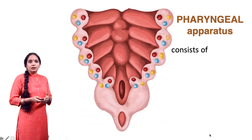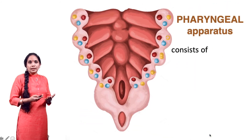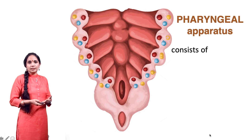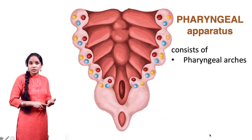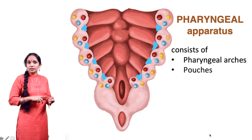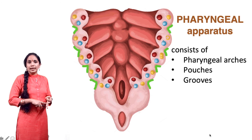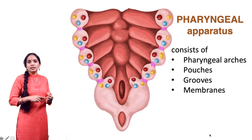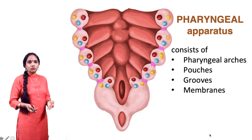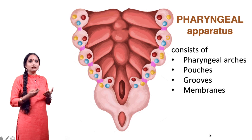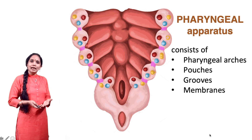Together we call all of them the pharyngeal apparatus. So the pharyngeal apparatus consists of pharyngeal arches, pharyngeal pouches, pharyngeal grooves, and pharyngeal membranes. All of this together forms your pharyngeal apparatus.